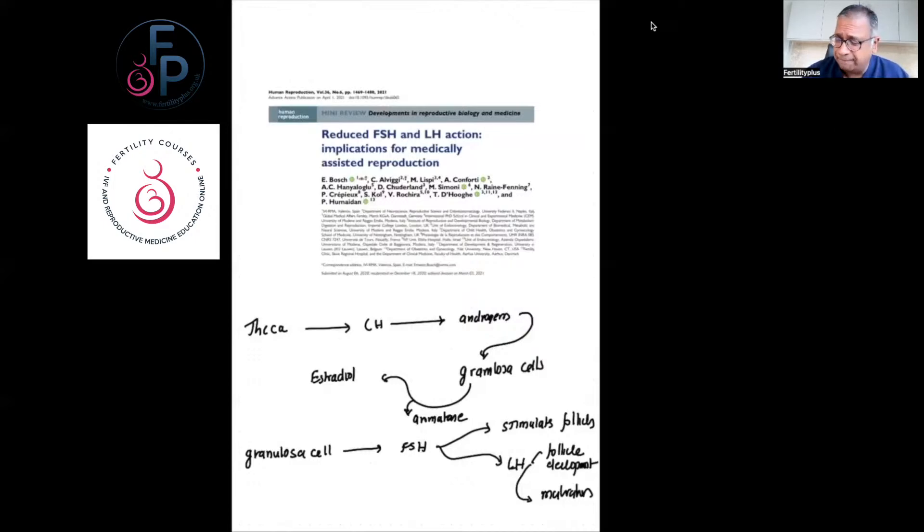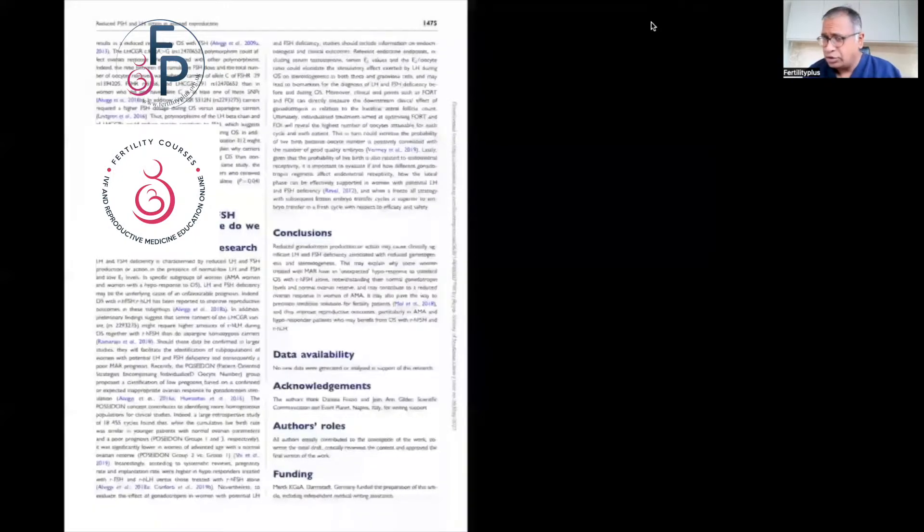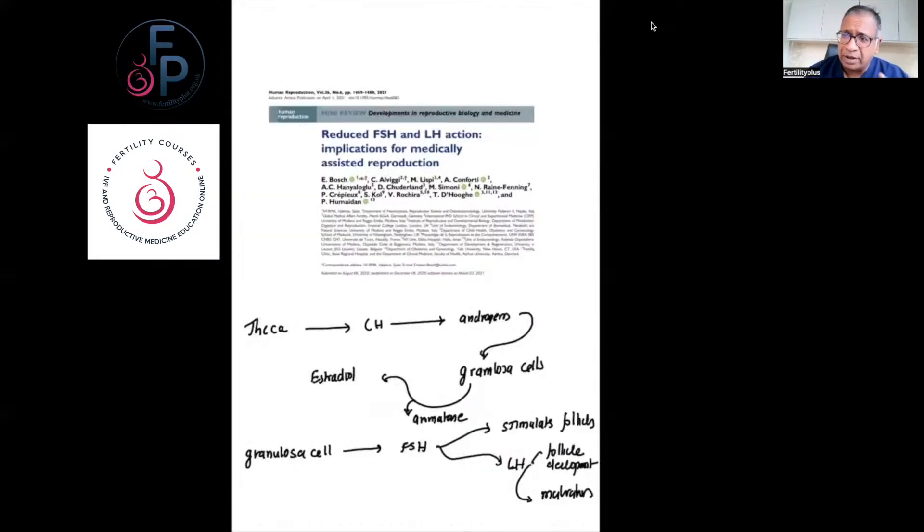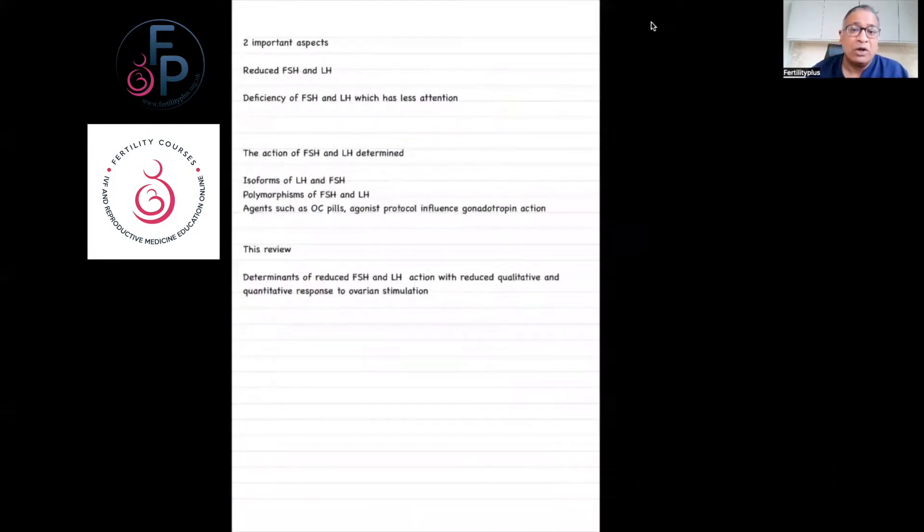If we go back to the initial part, you look at the two-cell two-gonadotrophin theory and the creation of estrogen by aromatase which acts on granulosa cells, and then the granulosa cells under the effect of FSH stimulate follicles and also influence LH, leading to follicular development and maturation. What I'm trying to do is use the paper itself and try to talk from the paper, because it's difficult to do this talk on a PowerPoint presentation.